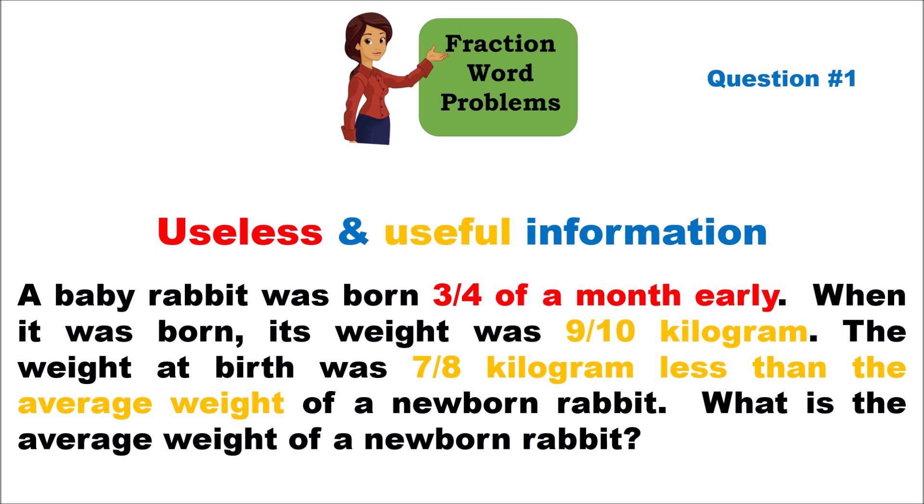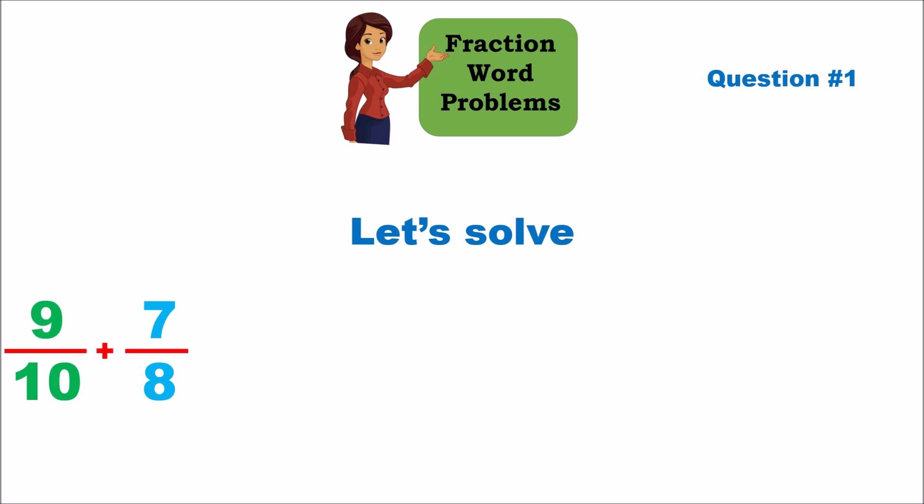The useful information is that its weight at birth was seven-eighths of a kilogram, and that weight was nine-tenths of a kilogram less than the average. Since the weight at birth was seven-eighths less than the average, we need to add these two numbers together: nine-tenths plus seven-eighths gives us the average weight.